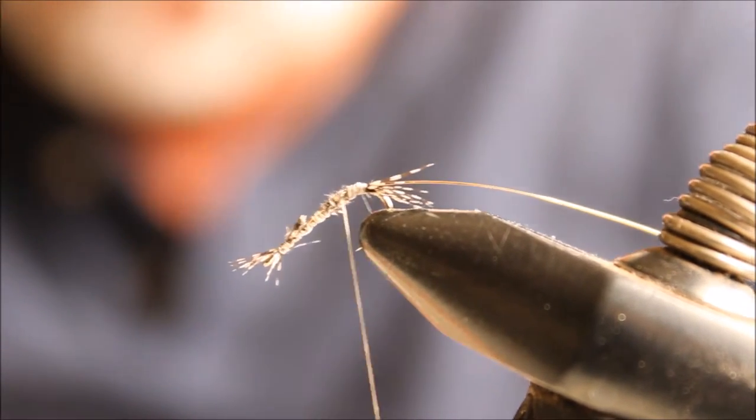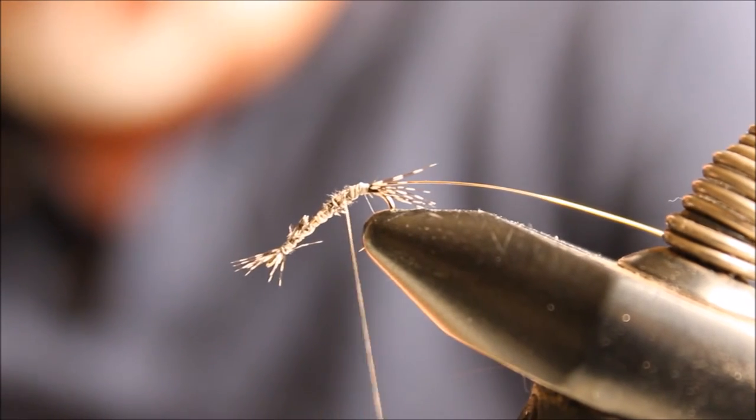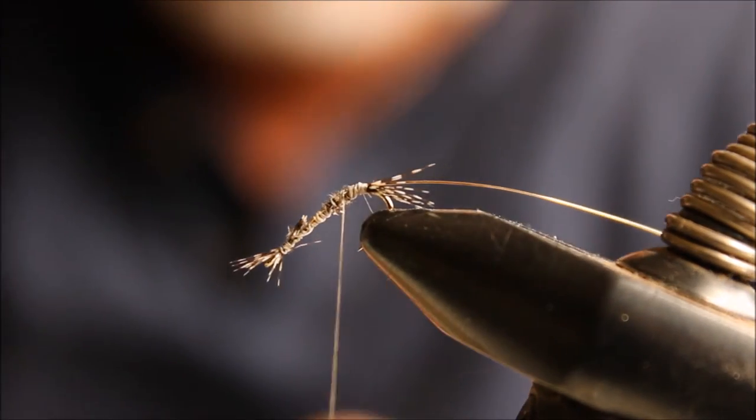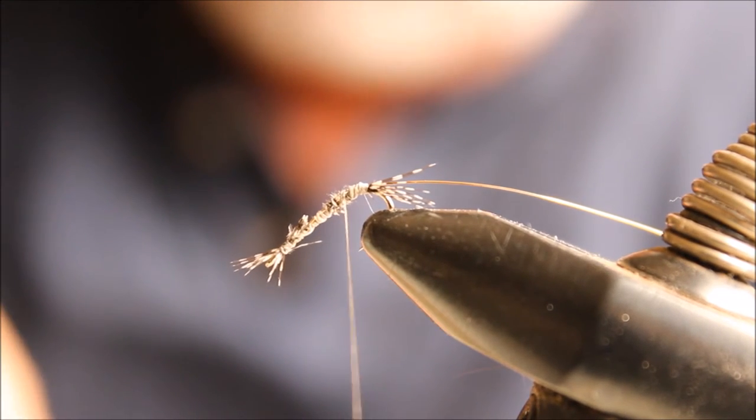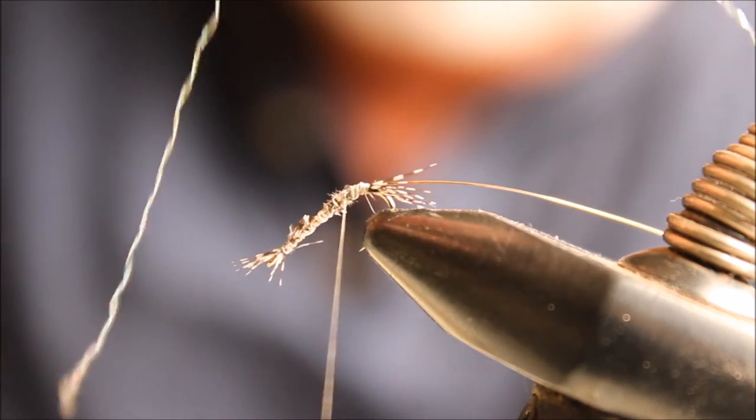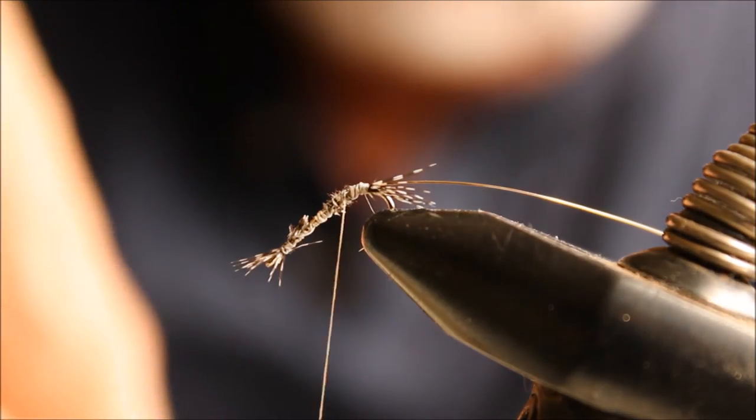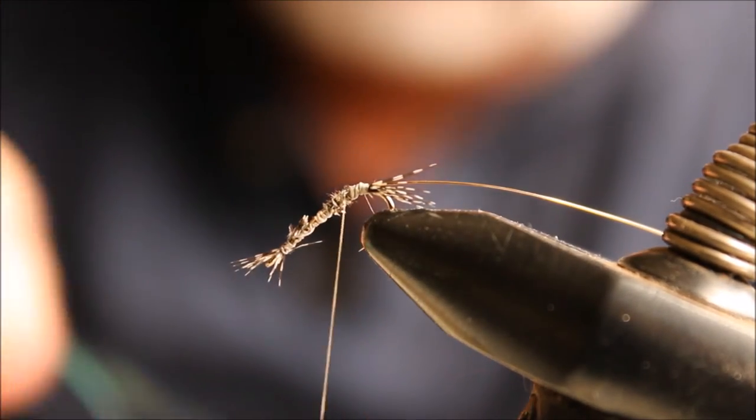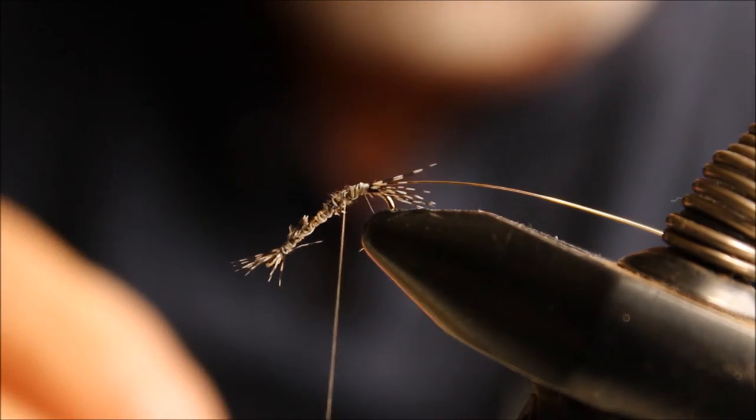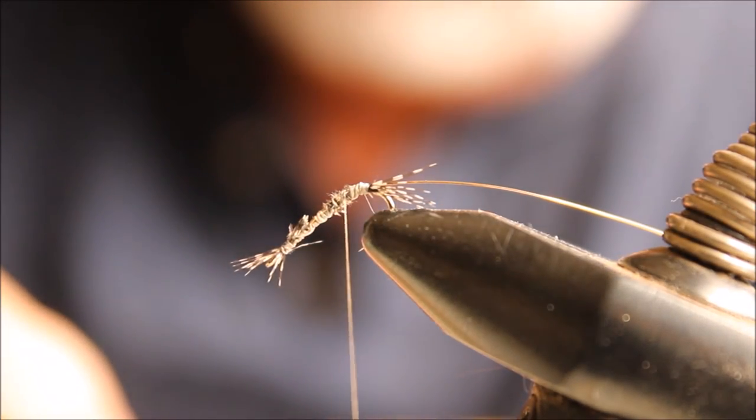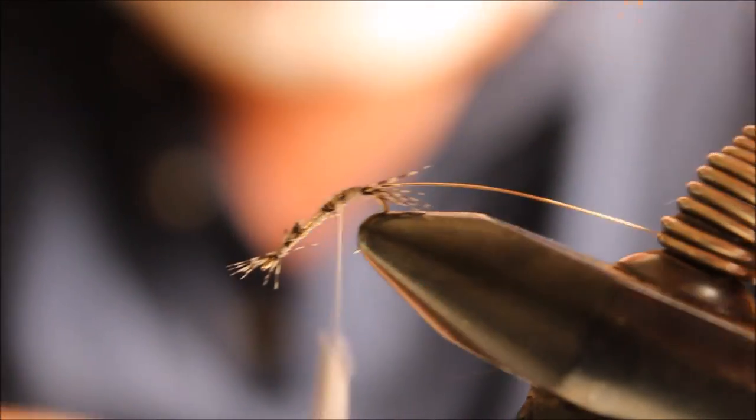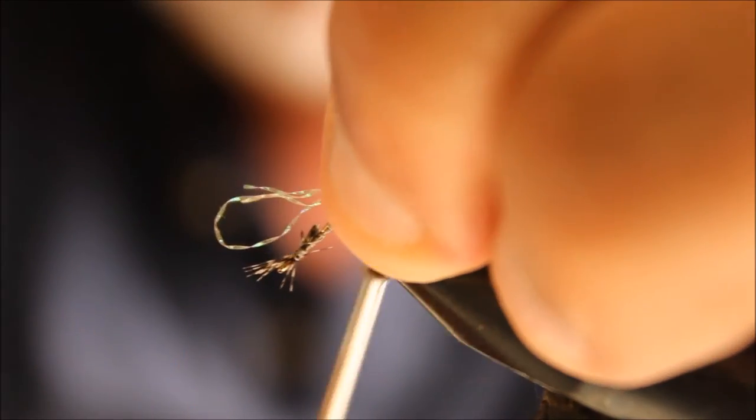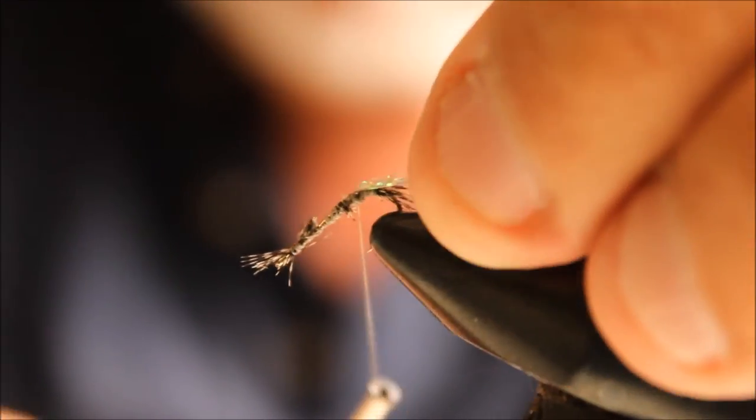Some people use a shell back or scud backs and all sorts of things. I just use a piece of crystal flash. In this color, I believe, is pearlescent. So I fold it once, now fold it over again, and I'm going to tie it in here. This will be my scud back. Use the pinch method you just saw right there.